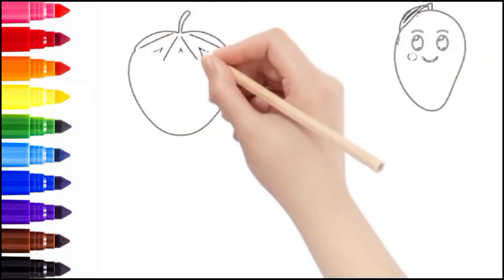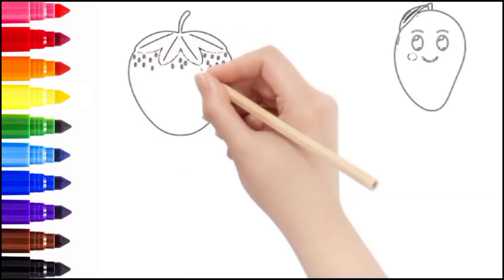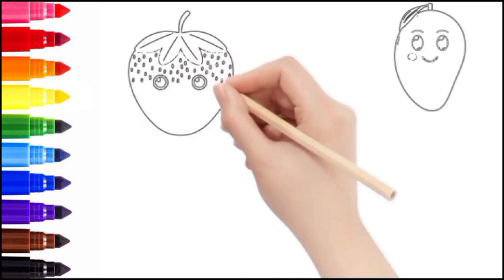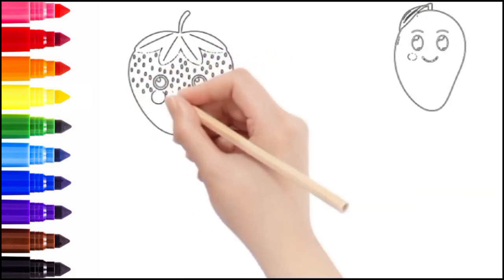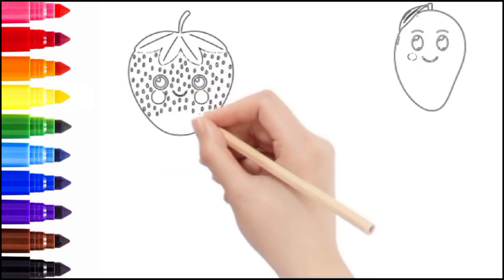Now, moving on to the strawberry. Begin by drawing an upside-down triangle with soft, rounded edges. This will be the body. On top of the strawberry, we're going to add its leafy crown, drawing several small curved leaves. We'll also add tiny dots all over the strawberry for its seeds.